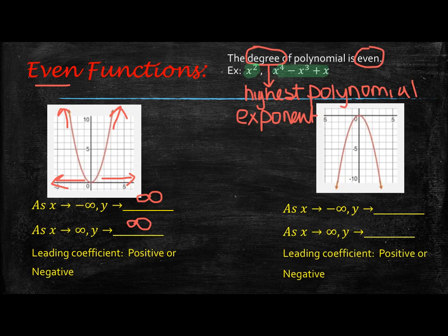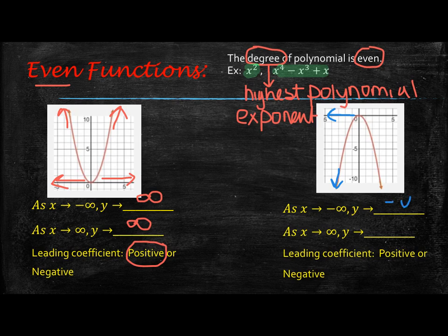The leading coefficient, because it is opening up, we know is going to be positive. Now let's look at the second one. As x approaches negative infinity — as my x values are moving to the left — my y values are going down, so that would be negative infinity. We recognize this is an even function, so as x approaches positive infinity, y is approaching negative infinity as well. Because it opens down, the leading coefficient is going to be negative.